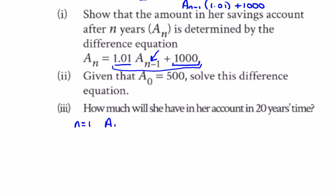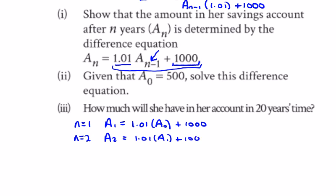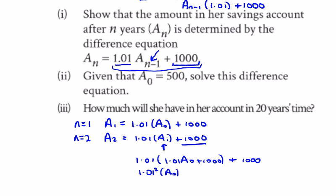Okay, solve this difference equation. If n equals 1, a_1 equals 1.01 times a_0 plus a thousand. When n equals 2, we get a_2 equals 1.01 times a_1 plus a thousand. Substituting the expression above, we get 1.01 times (1.01 times a_0 plus a thousand), which gives 1.01 squared times a_0 plus 1.01 times a thousand.